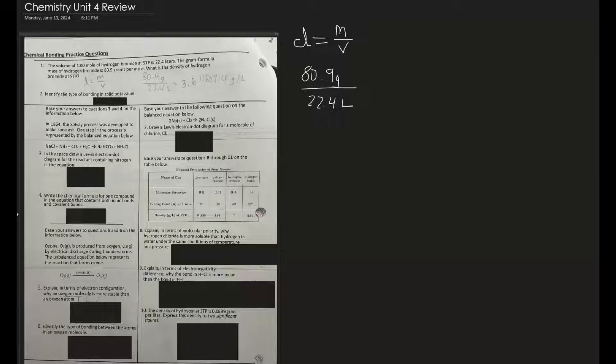Let's move on to number two. Identify the type of bonding in solid potassium. What is potassium? Potassium is a metal, right? So if there's bonding between two metals, that indicates it's a metallic bond.